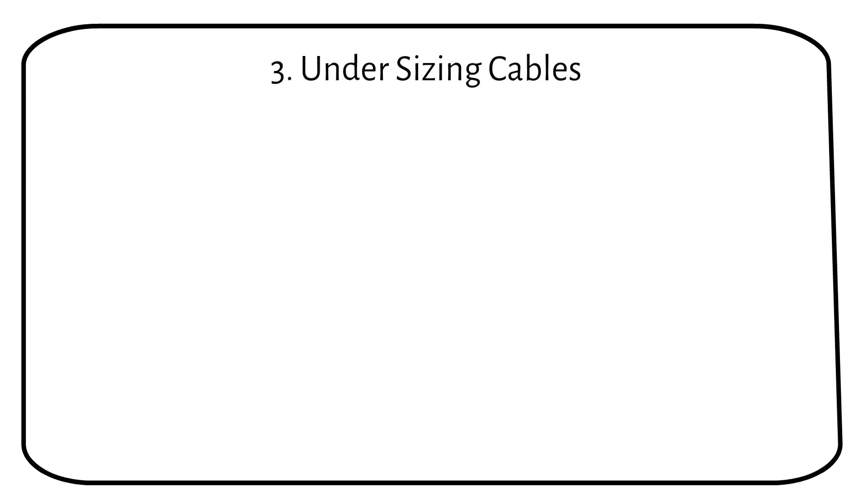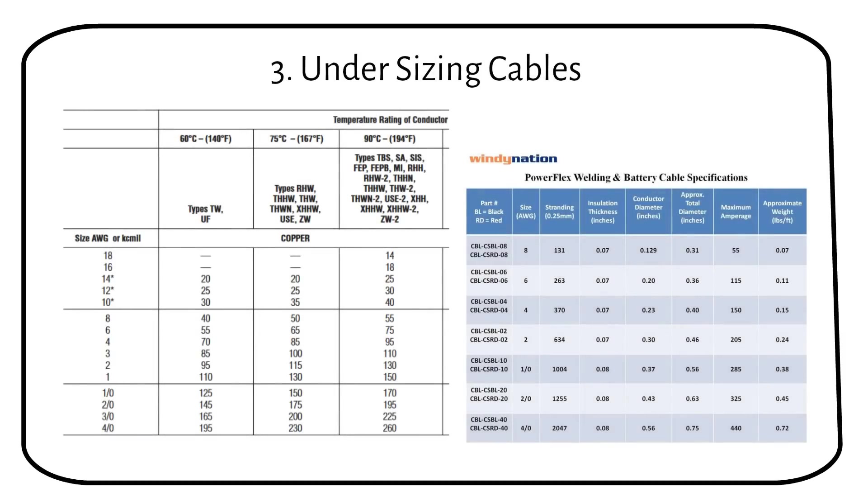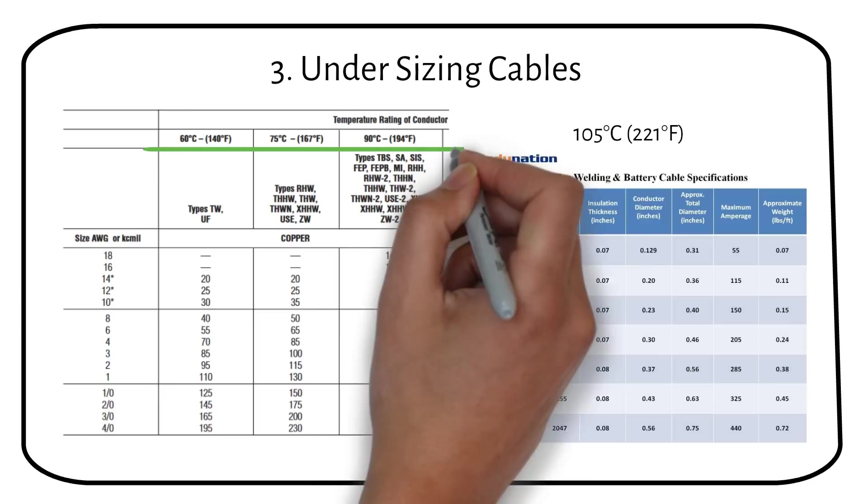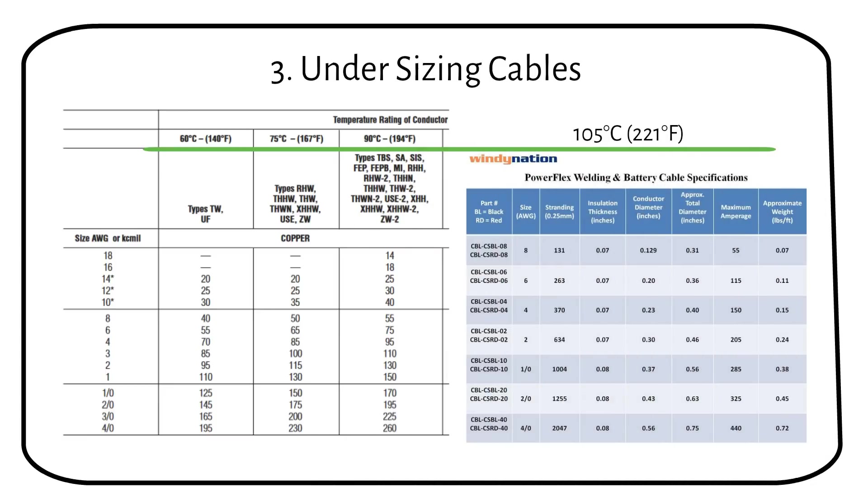Mistake number 3 are undersized cables, that can lead to overheating or even melting of the cable. Cables are rated for different insulation temperatures, such as 60, 75,